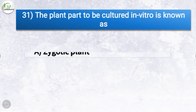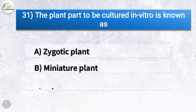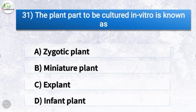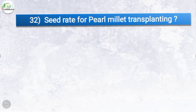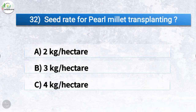Question number thirty-one: the plant part to be cultured in vitro is known as what? The options are zygotic plant, miniature plant, explant, or infant plant. The correct answer is option C, explant. So the plant part to be cultivated in vitro is known as explant.